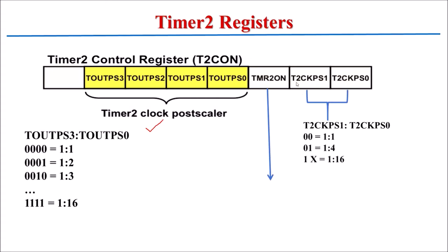The two bits T2CKPS1 and T2CKPS0 are used for the pre-scaler value. 0,0 is for divide by 1; 0,1 is for divide by 4; and 1,X — where X can be 0 or 1 — is for divide by 16. These are the pre-scaler bits. Then the TMR2ON bit: if it is 1, Timer 2 is ON; if it is 0, Timer 2 is OFF.